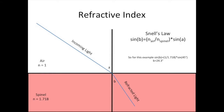This slide is just a little example of how refraction works. We have air with a refractive index of 1 (n equals 1), and a spinel — which is a mineral we'll be seeing in a bit — with a refractive index of 1.718. Snell's law shows that the relationship between angle A and angle B is going to be based on the relative ratio of the refractive index of air and spinel.